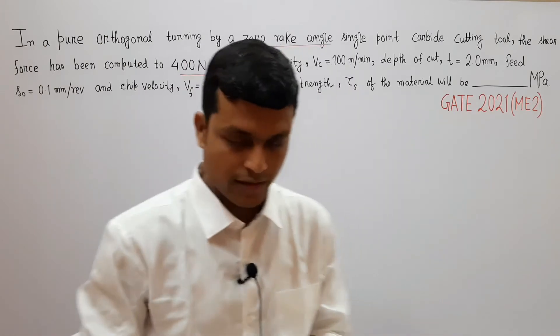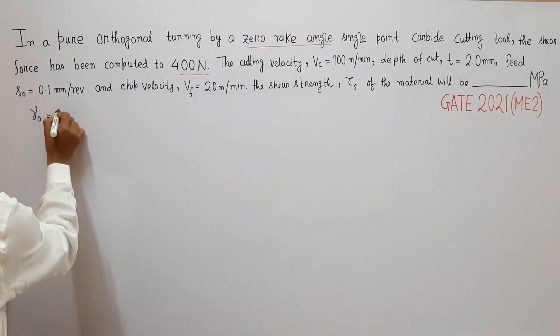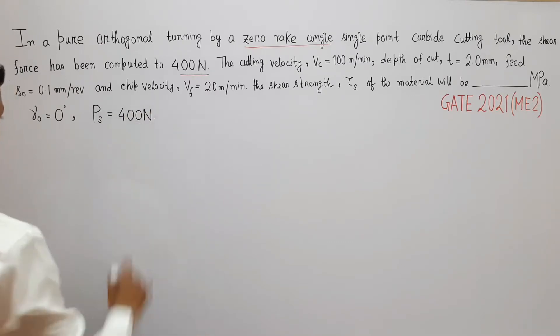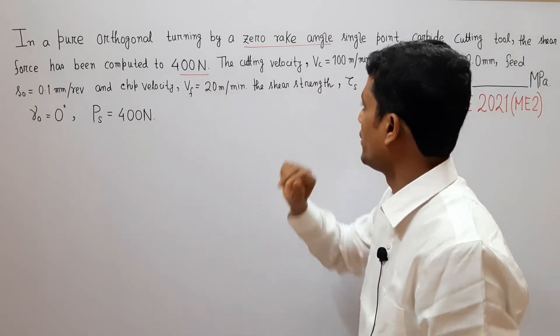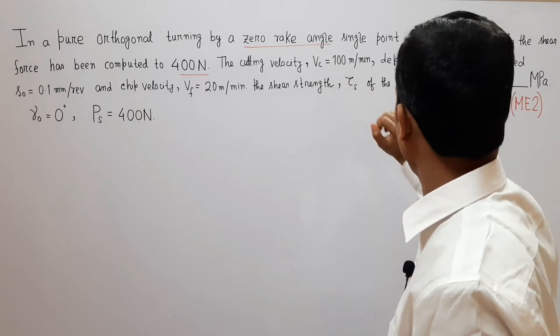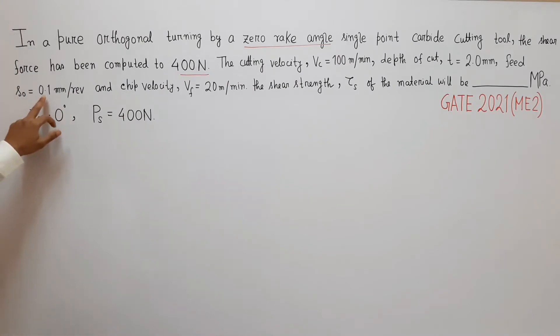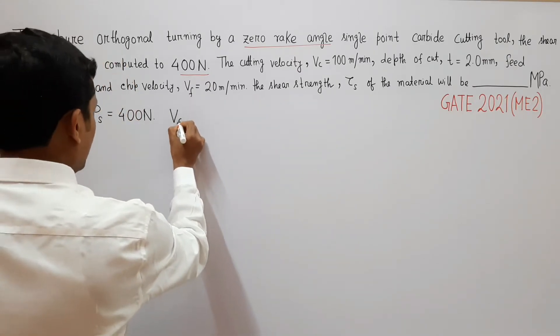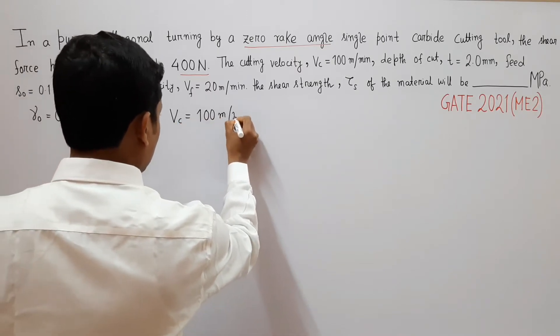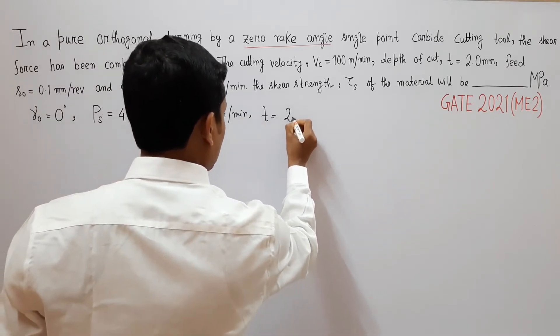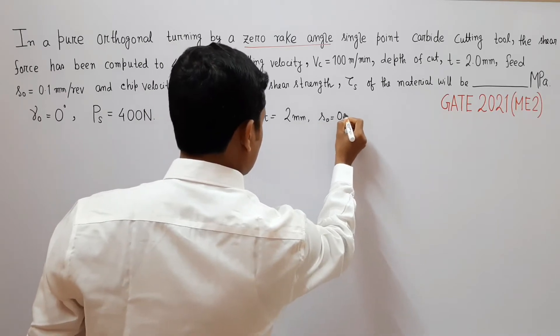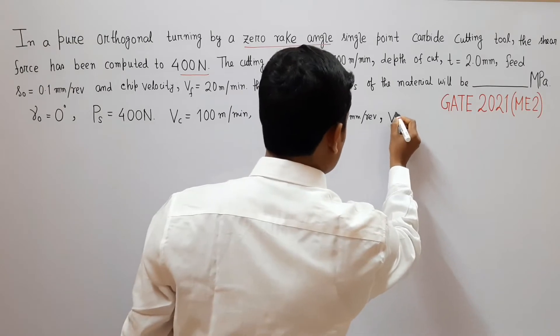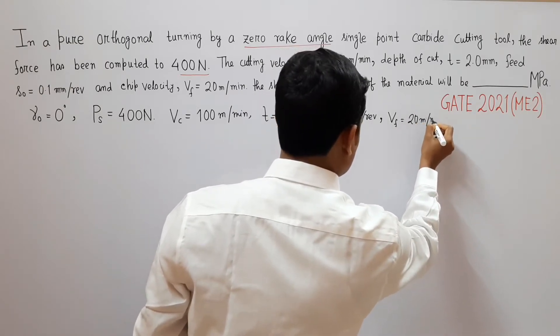So two informations are given: the orthogonal rake angle is zero degrees and shear force is 400 Newton. Cutting velocity Vc is 100 meter per minute, depth of cut 2 mm, feed is 0.1 millimeter per revolution, and chip velocity Vf is 20 meter per minute.